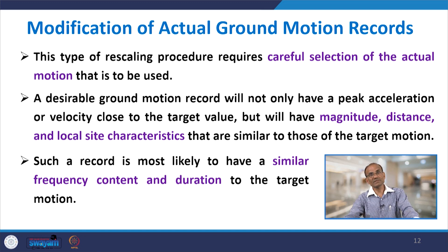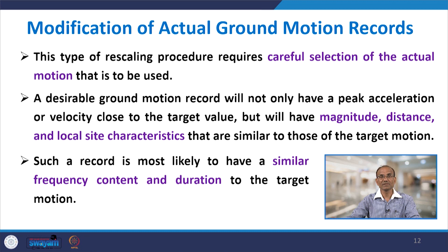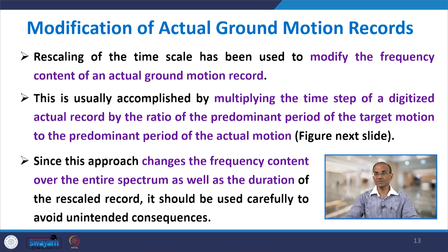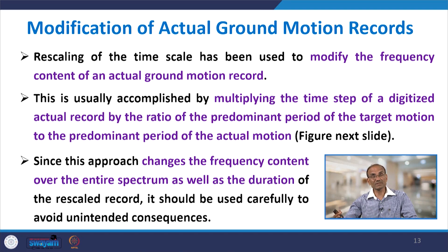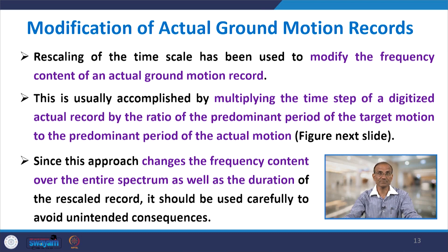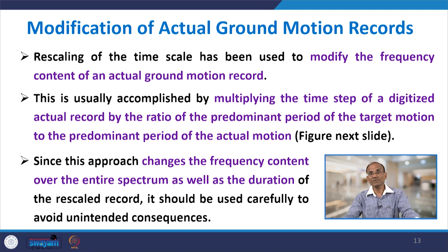Such a record is most likely to have similar frequency content and duration to the target motion. Rescaling of the time scale has also been used to modify the frequency content of an actual ground motion record. One way is to just scale the peak ground acceleration up or down. Another way is to keep PGA and PGV constant but rescale the time scale — once you change the time duration, the frequency content will also change.